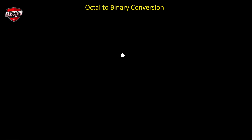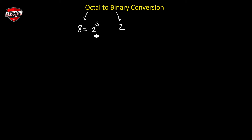Hello dear student, welcome back to the lecture series of digital electronics. In this video we will convert the octal number into binary number system. The conversion method for octal to binary is the reverse process of binary to octal, which we discussed in our previous video. The base of octal is 8 and the base of binary is 2, and we can represent 8 as 2 to the power of 3.